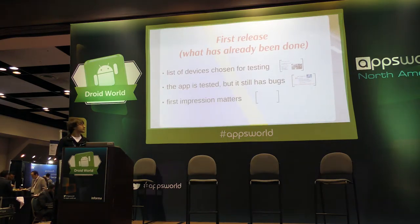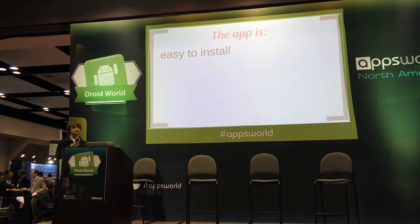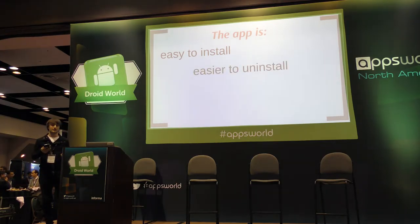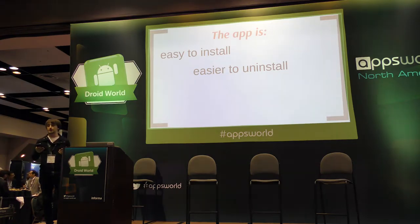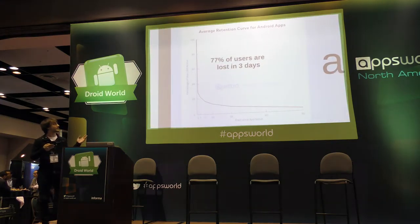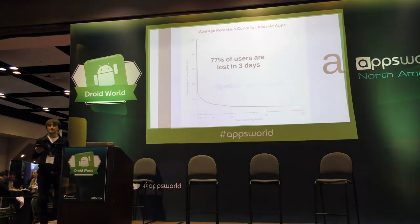We are talking about mobile applications, so first impressions really matter. Nowadays, mobile applications are very easy to install — you just go to the market, download, and have it on your phone. And it's even easier to uninstall — you just long press and press delete, and it's gone. These apps are even easier to forget. 77% of users are lost in three days. People install applications, use it once or twice, and if they don't like it they stop using it. They may not even delete it, because we now have phones with 60 or 100 gigabytes of memory. They just stop using it.